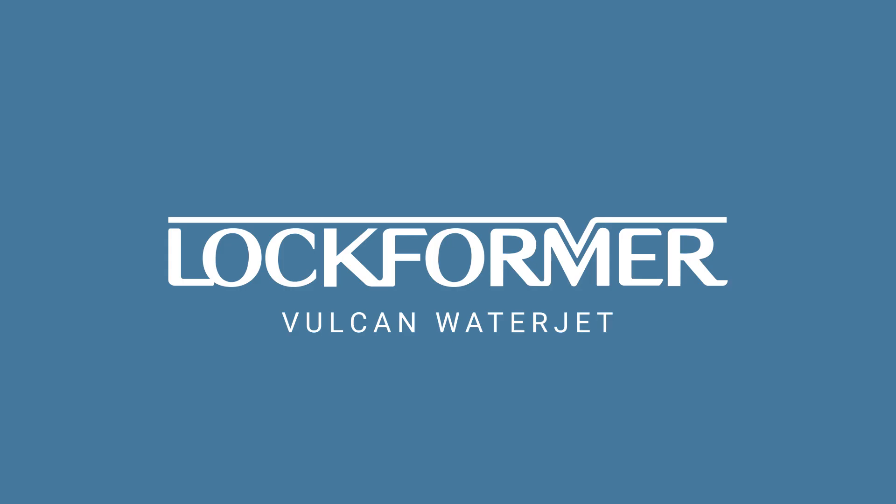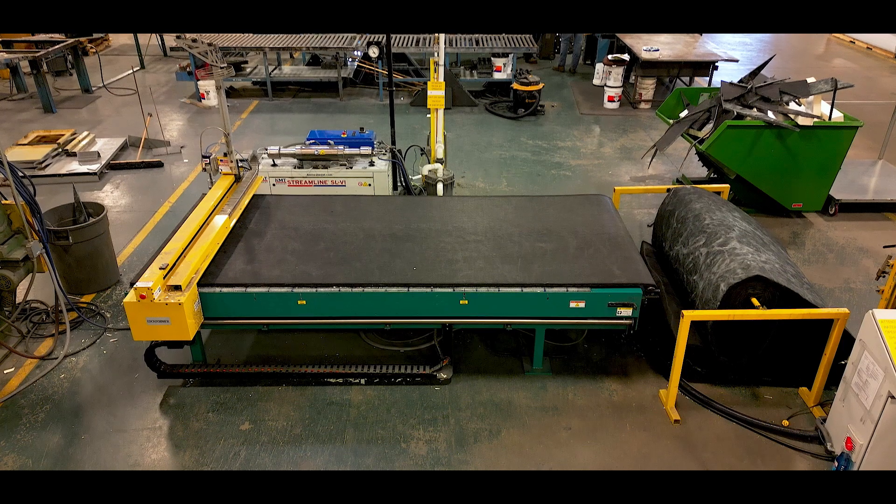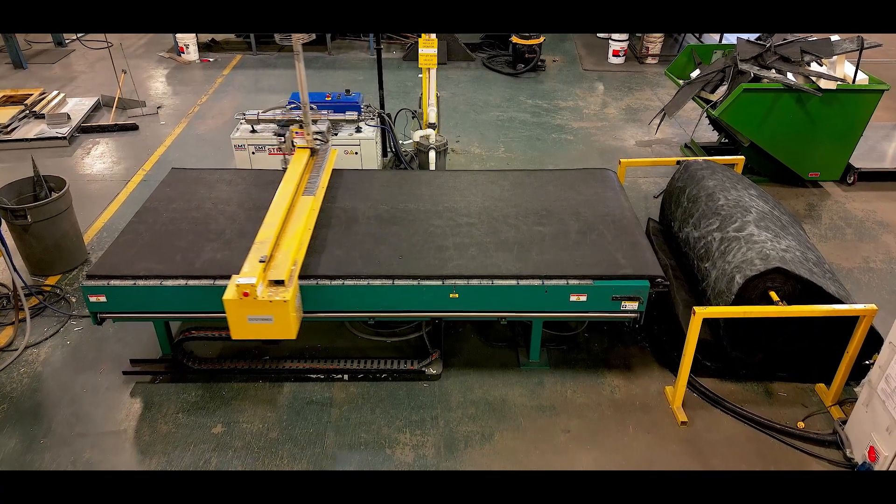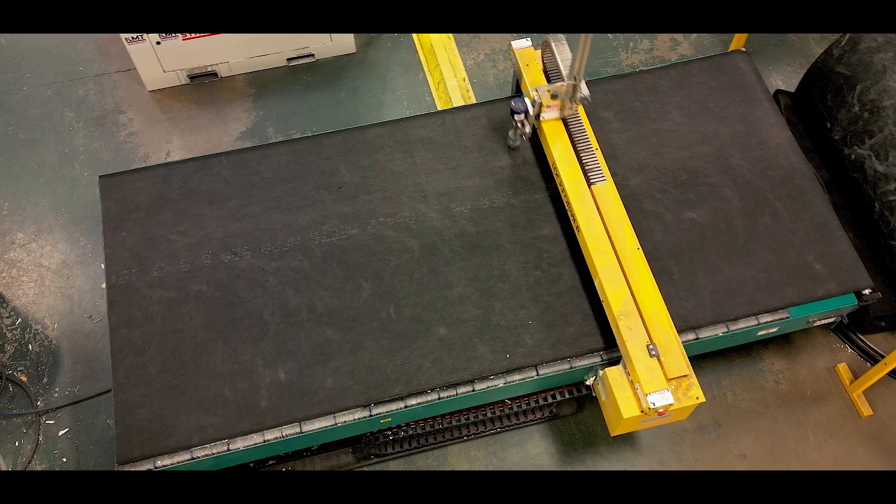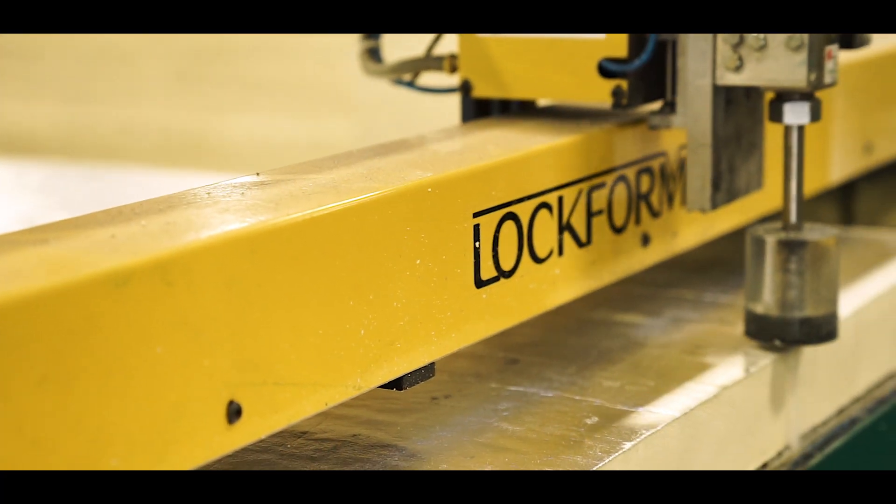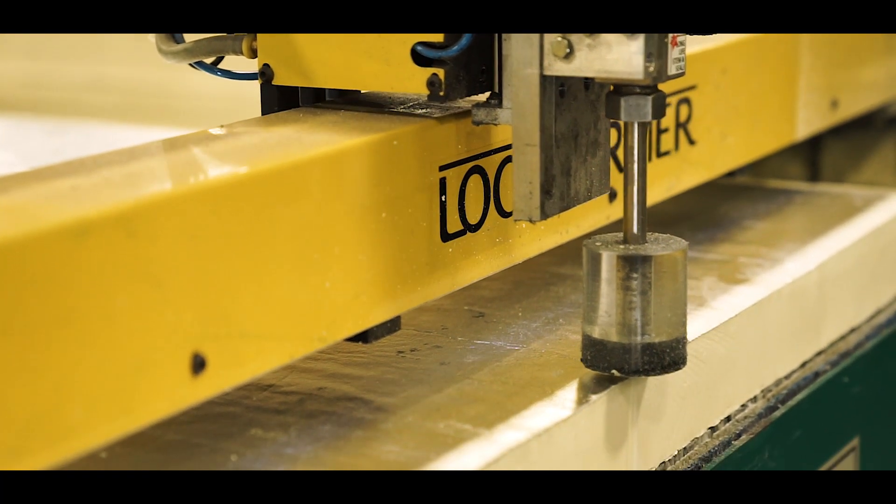From Lockformer, the industry leader in HVAC sheet metal roll forming systems. The Lockformer Vulcan Waterjet Cutting System automates the slow, costly, and inexact manual process of cutting insulation, delivering an unrivaled level of quality and efficiency.